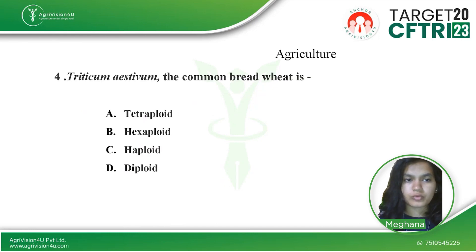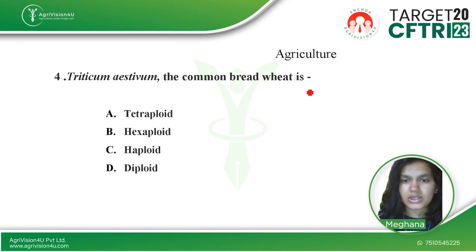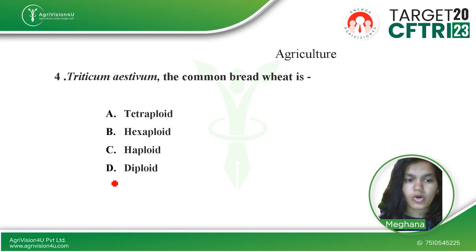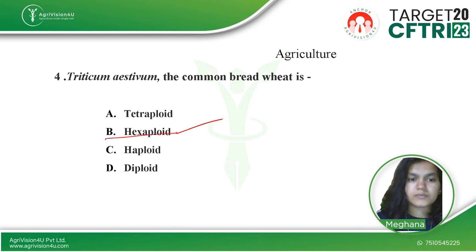The fourth question is from agriculture: Triticum HD1, the common bread wheat, is — option A, tetraploid; option B, hexaploid; option C, haploid; option D, diploid. Triticum HD1 is a hexaploid, so option B is the right answer.